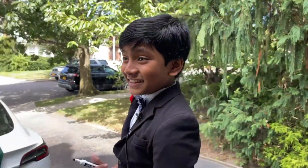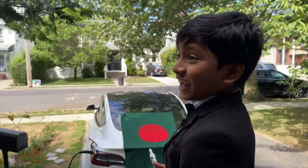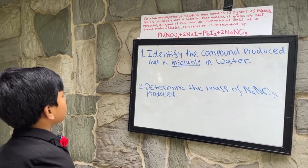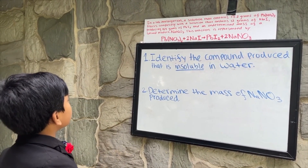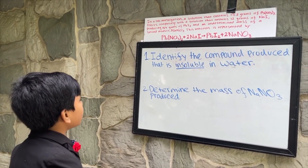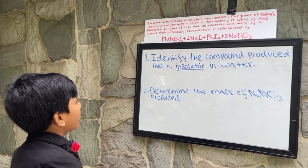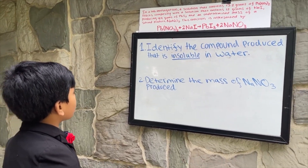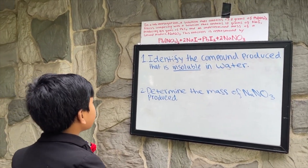13.2 grams of lead nitrate reacts completely with a solution that contains 12 grams of sodium iodide, producing 18.4 grams of lead iodide and an undetermined mass of a second product, sodium nitrate.